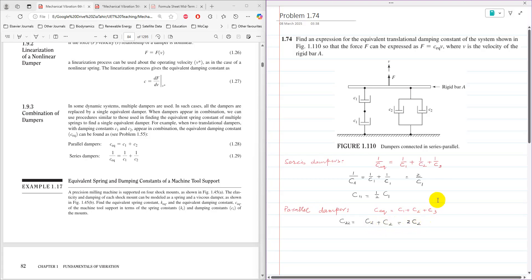Once I have simplified them, the new arrangement will be one damper here, one damper here, and one damper here. Now when I replace that with the single damper c11 and this one with the single damper c22, then c11 and c22 are now connected in parallel.